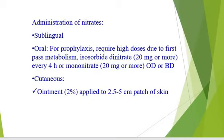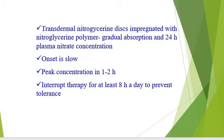Other routes include cutaneous routes applying the ointment in the form of a patch. Transdermal nitroglycerin is a disc impregnated with a nitroglycerin polymer having gradual absorption and 24-hour plasma nitrate concentration. The onset is slow; however, it provides good results. But patient compliance is low as it depends on an external source for its administration.